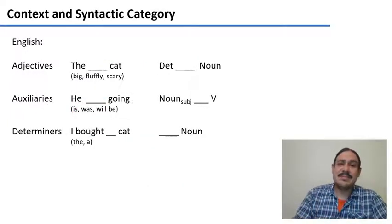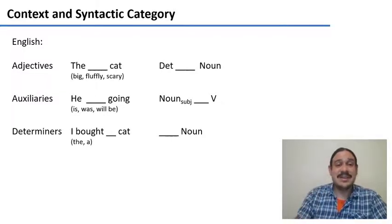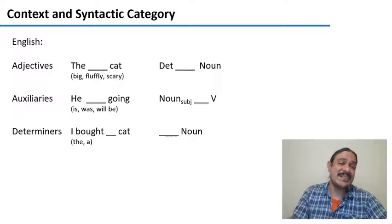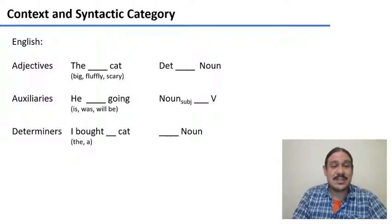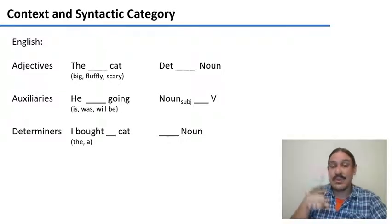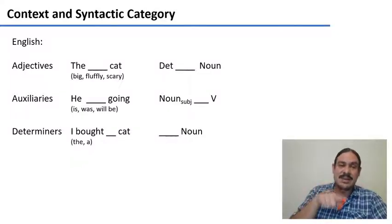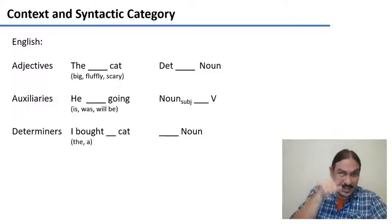So you have to look at a word and its context in order to figure out what its syntactic category is. This is the way practically all syntactic categories of English are defined. For example, adjectives are words that can appear between determiners and nouns, like in 'the big cat,' 'the fluffy cat,' 'the scary cat.' Auxiliaries are words that can go between a subject and a verb, like 'he is going,' 'he was going,' 'he will be going.' Determiners are words that can come before a noun, like 'I bought the cat,' 'a cat.' Notice that the definition is stated in terms of what you can find around the word.